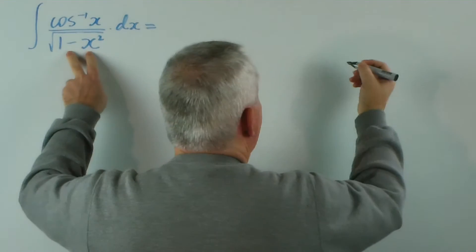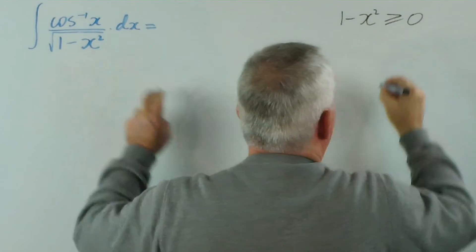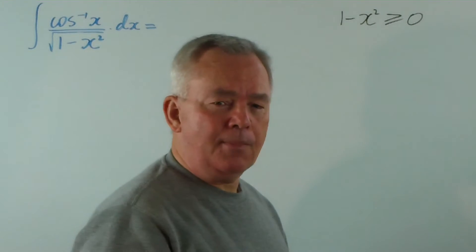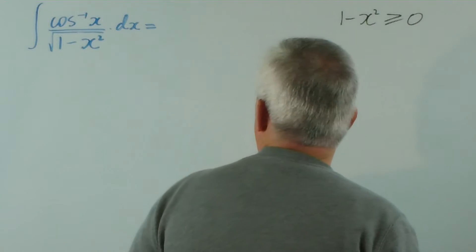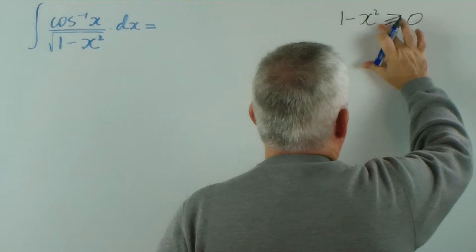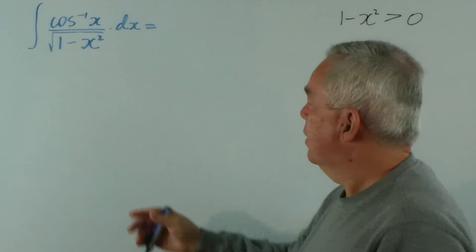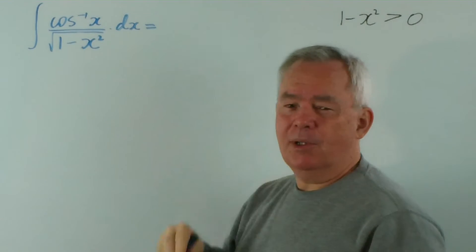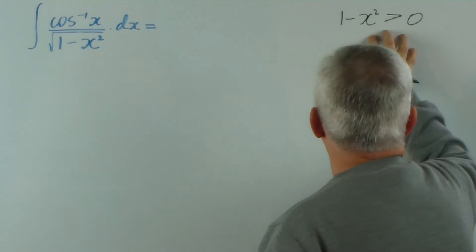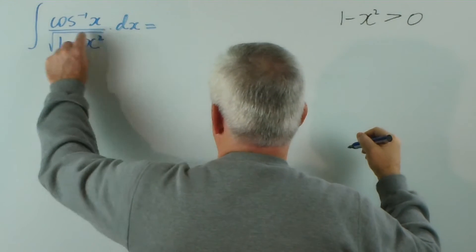So we know that 1 minus x squared must be greater than or equal to zero, purely because of this radical. Now we can't even accept zero. Can you see why? Because the square root of zero would be zero, and we can't divide by zero. So this is our domain restriction because of this part of the function.